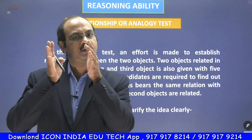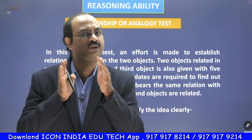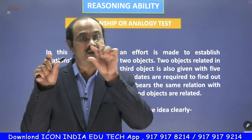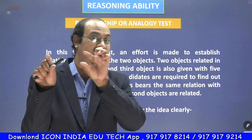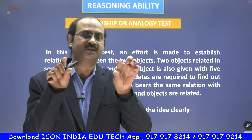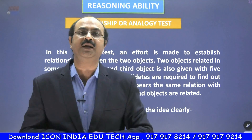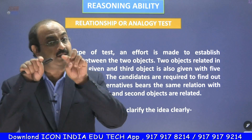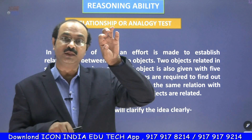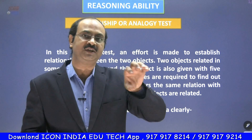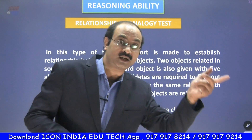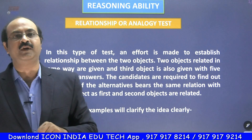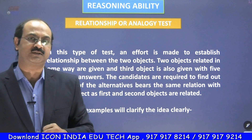So, when you are given the first two things, whatever they may be, there will be a certain relationship, a certain correspondence between the first and the second items. Based on that logic, the third one whichever is given, its corresponding fourth one we should identify from the given choices.